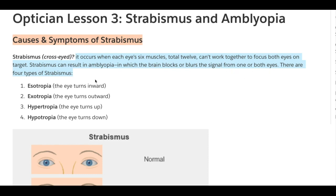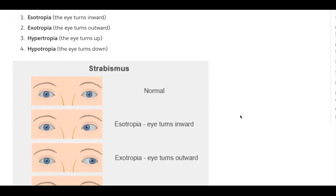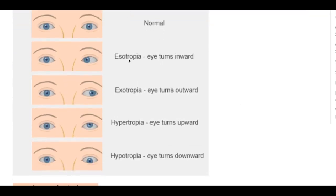There are four types of strabismus. Let's go over them with a picture. Esotropia: one or both eyes move inward toward the nose. Exotropia — 'exo' means out — one or both eyes turn outward.